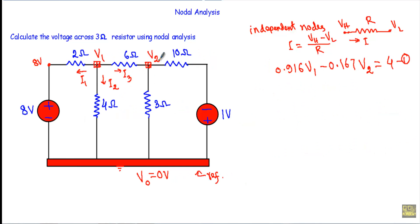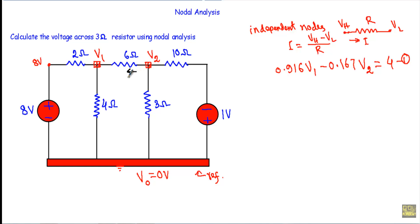After that I will apply KCL at node number 2. When applying KCL at node 2, forget what was done at node 1. There is no current source here, so all currents are unknown and outgoing from this node. The current through the 6 ohm is I4, the current through the 3 ohm is I5, and the current through the 10 ohm is I6.